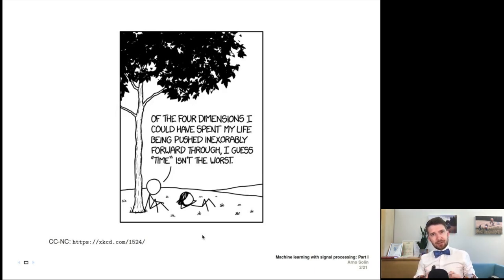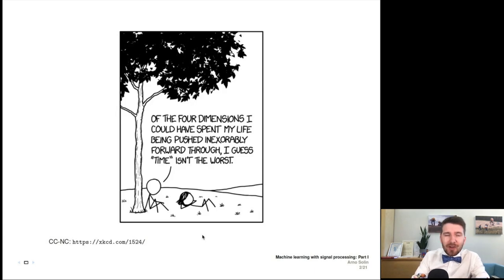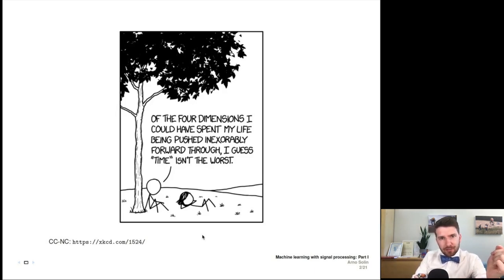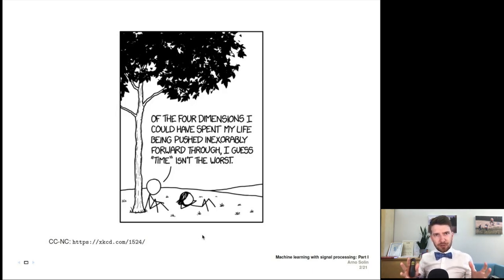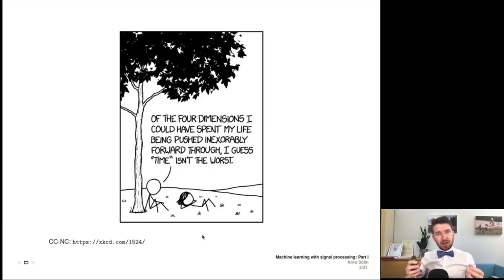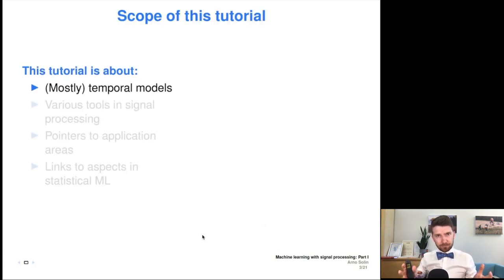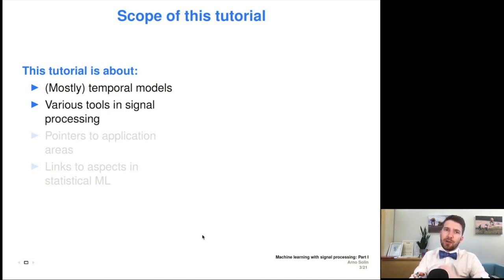Time is fundamentally different from the three spatial dimensions in the 4D world we live in. Time has a direction and observations can be ordered over that temporal direction. If you think of more general systems beyond just 4D spatial-temporal systems, any system or quantity that has some sort of temporal structure or dynamics over time can be modeled as a spatiotemporal model. This tutorial is mostly about temporal models, and I tried to provide an overview of various tools from signal processing that can help model time and temporal phenomena.